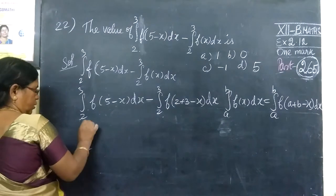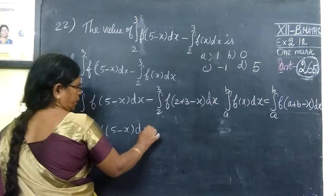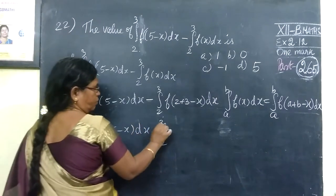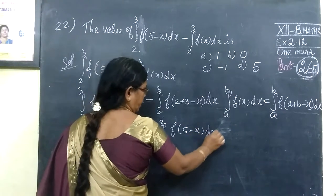So integral 2 to 3 of f of 5 minus s ds, minus integral 2 to 3 of f of 5 minus s ds.